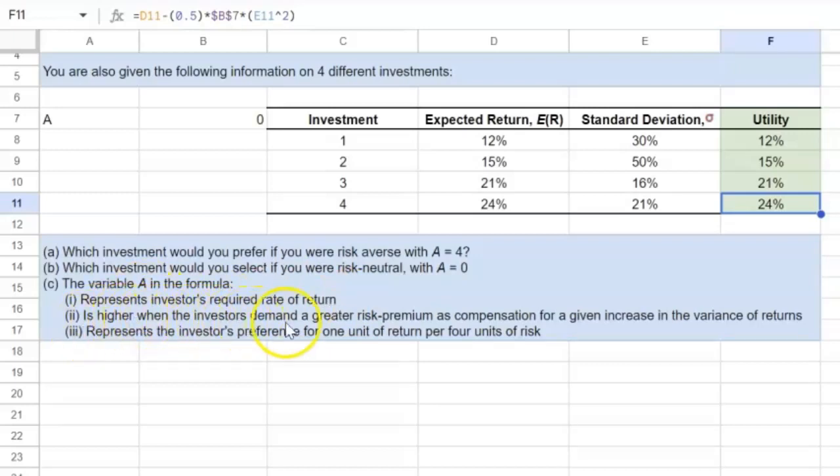A is higher when the investors demand a greater risk premium as compensation for a given increase in the variance of returns. This is a long way of saying the same thing. If an investor is risk averse, that means that they don't like risk,